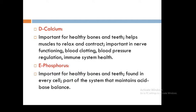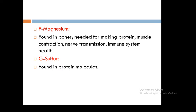Phosphorus is very important for healthy bones and teeth, found in every cell, and part of the system that maintains acid-base balance. It is found in meat, fish, chicken, eggs, milk, and processed foods.